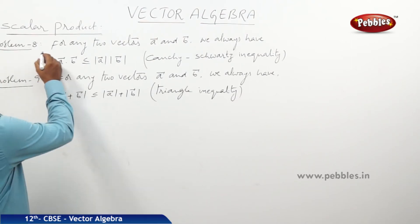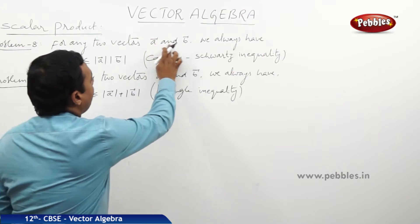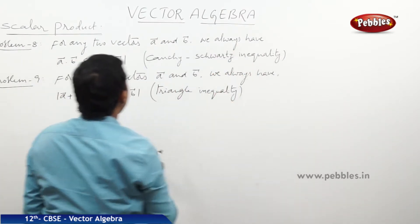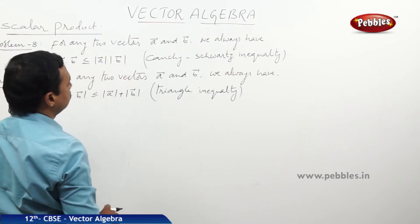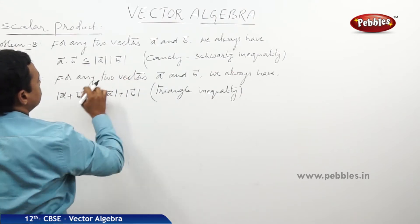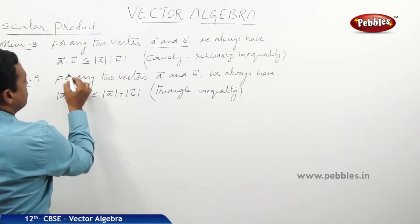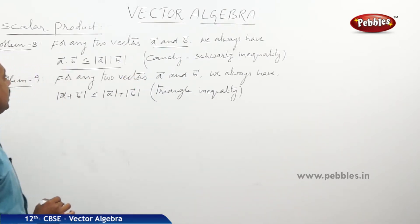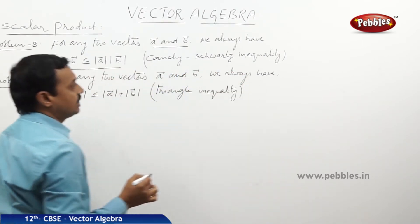Now, one more problem. For any two vectors a and b, we always have a·b less than or equal to |a||b|. This inequality always holds and is known as the Cauchy-Schwarz inequality.